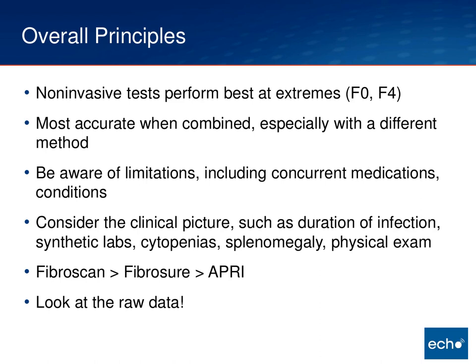I also want you not to ignore the whole clinical picture. If you come to our hep C echo, we often ask how long they've been infected. If someone has been infected for 20 or 30 years and there's a possibility of cirrhosis, that jives with one lab result. If they're 25 or 30 years old, cirrhosis is pretty unlikely without extreme drinking or other liver injury. Also look at synthetic labs — bilirubin, albumin. Neutropenia or thrombocytopenia are often tip-offs for advanced fibrosis and splenomegaly. And pay attention to physical exam.